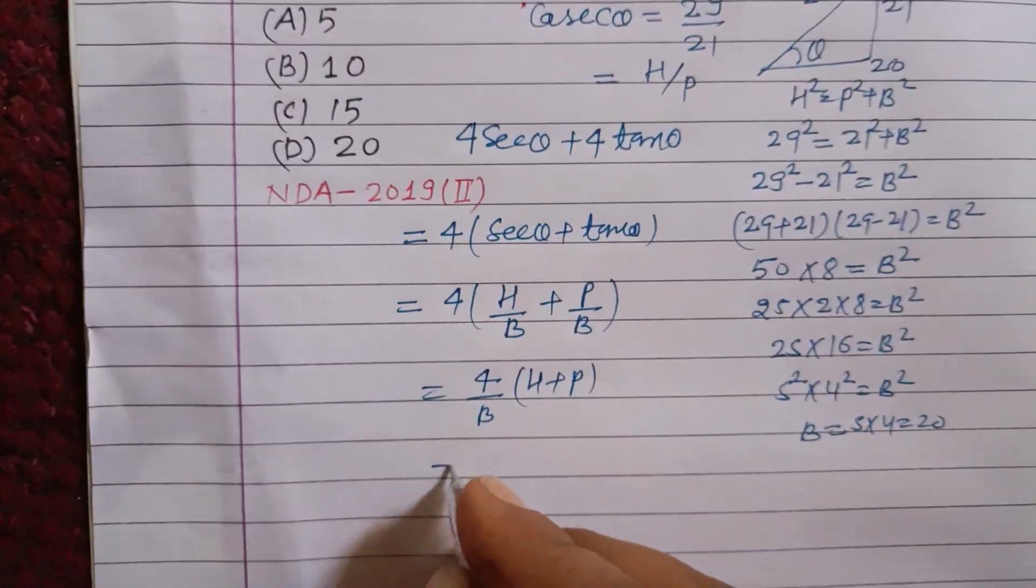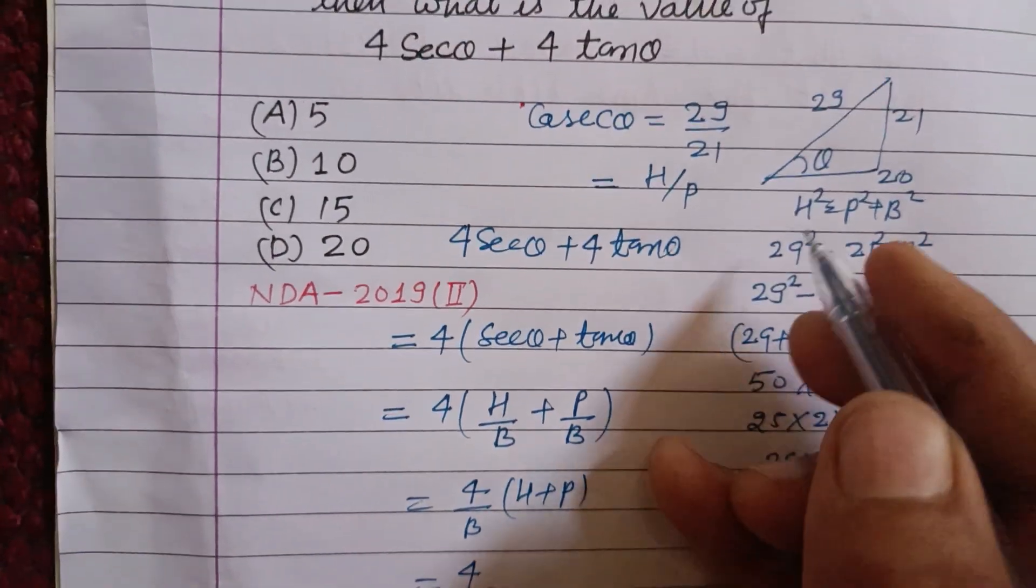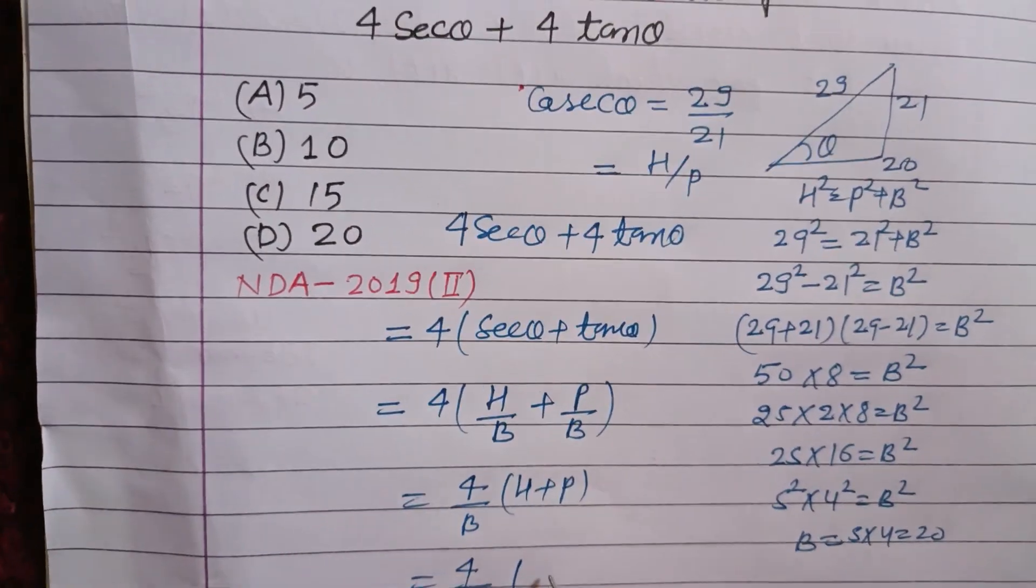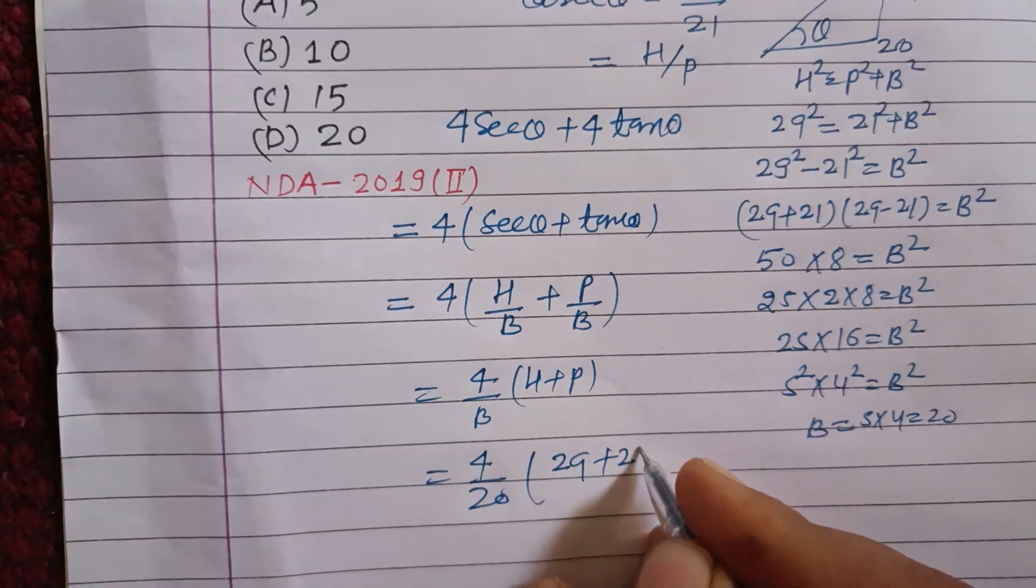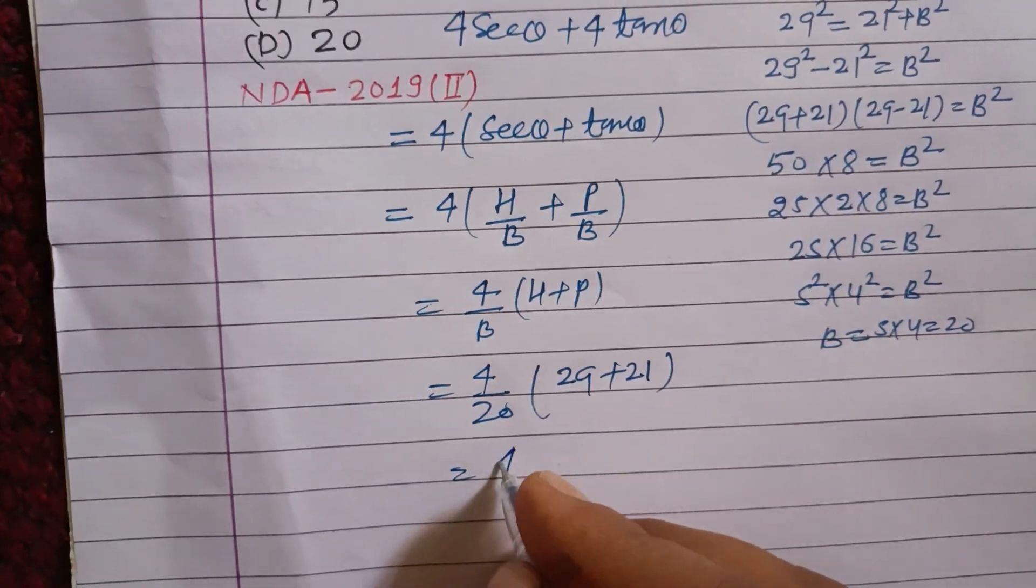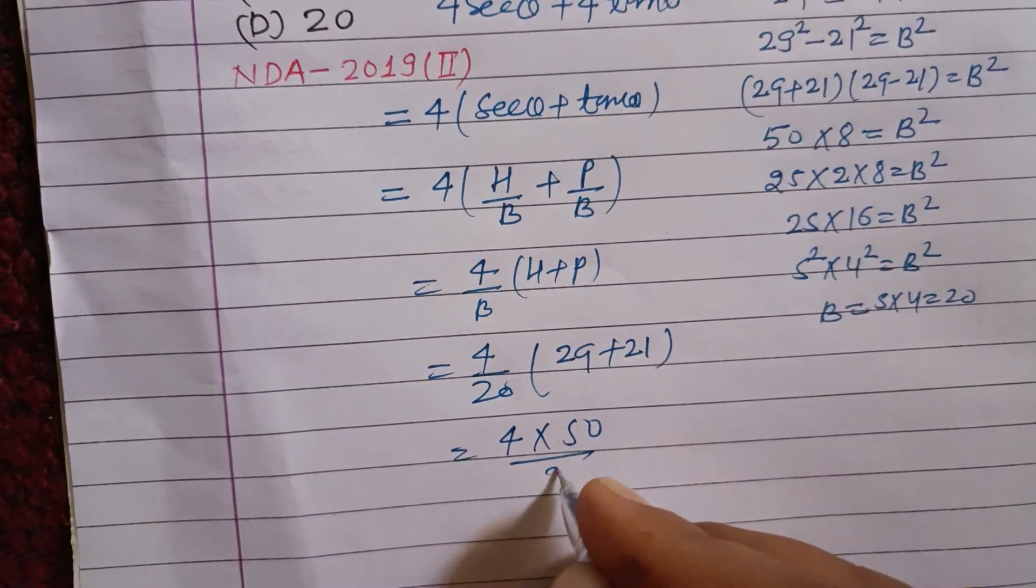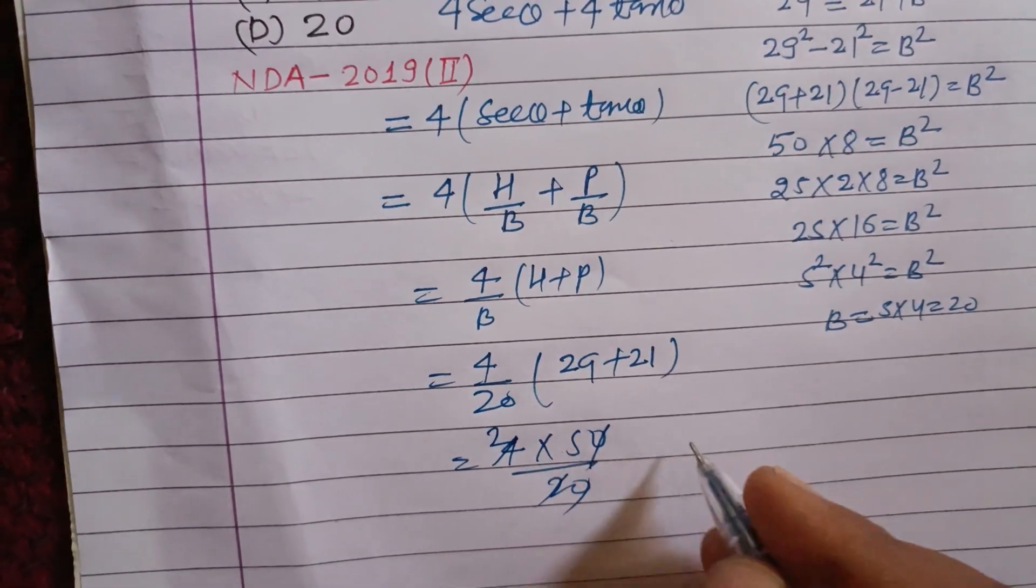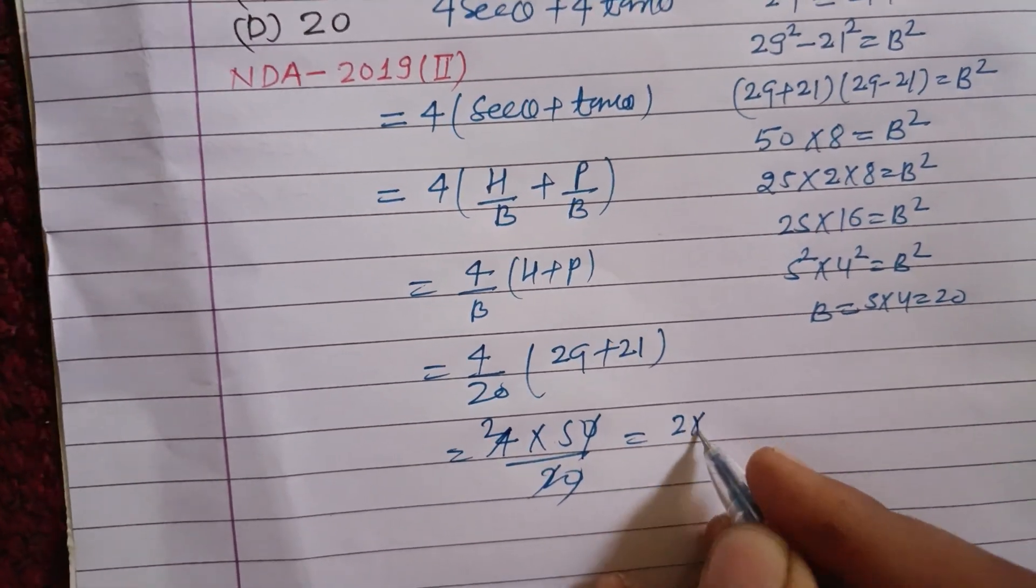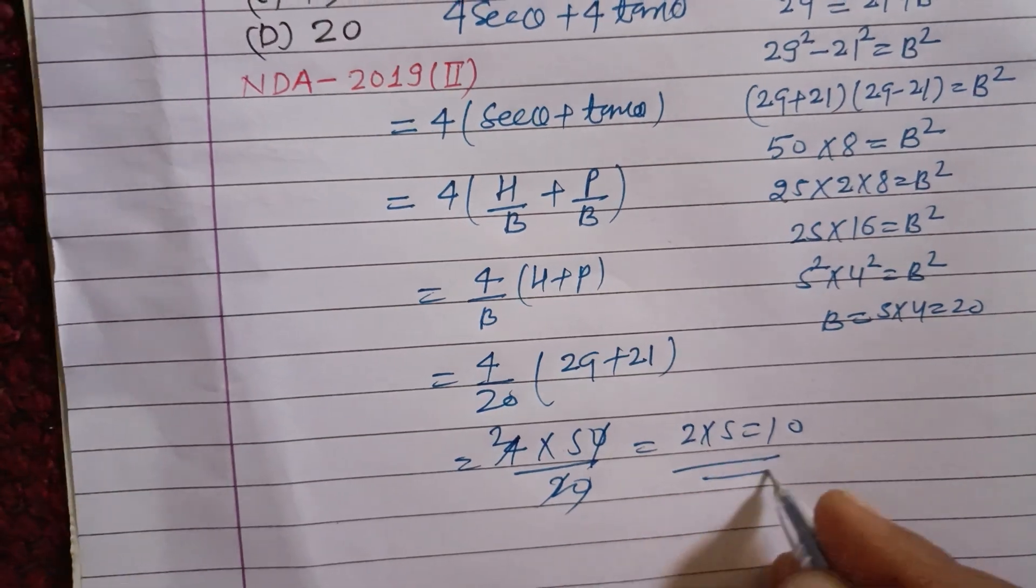So it is 4 times (h/b plus p/b). Base is 20, hypotenuse is 29, and perpendicular is 21. So 4 into 50 over 20. Cancel the zeros, 2 times 2 is 4, 2 times 5 is 10. So 10 is the correct answer.